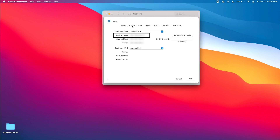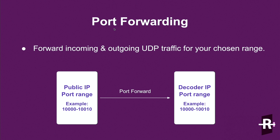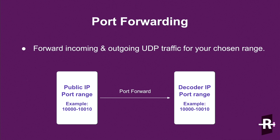So you'll need this number, and on your router's firewall, forward incoming and outgoing UDP traffic for your chosen port range. For my example, I chose ports 10,000 to 10,010. On the firewall, forward this traffic to the same port range on the local IP address of your decoder. For my example, I would forward UDP ports 10,000 to 10,010 of my public IP to ports 10,000 to 10,010 of the local IP of the decoder.